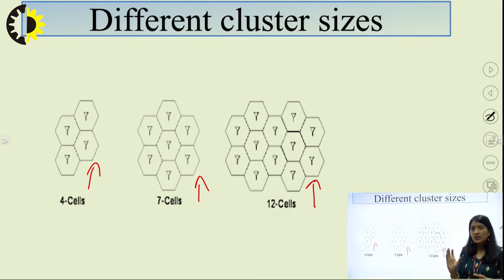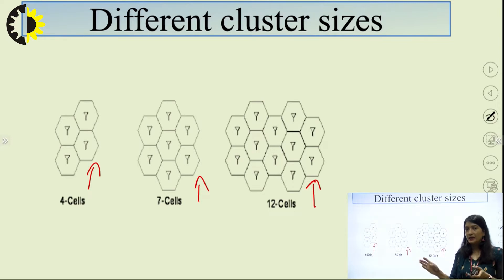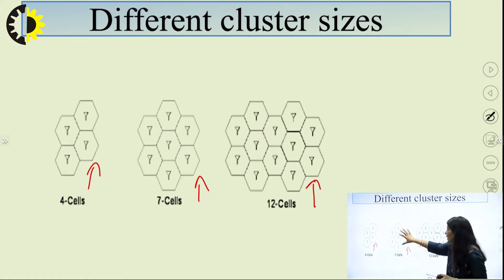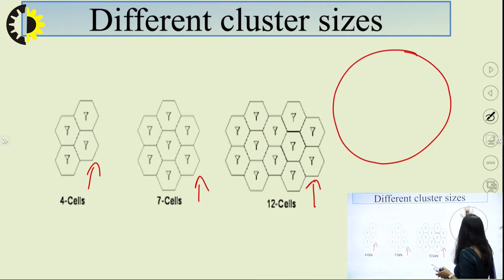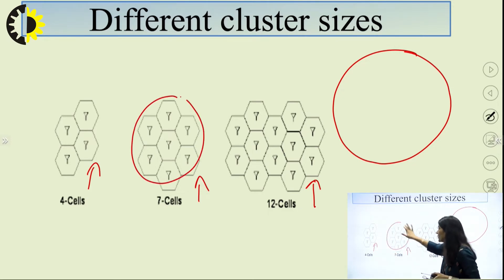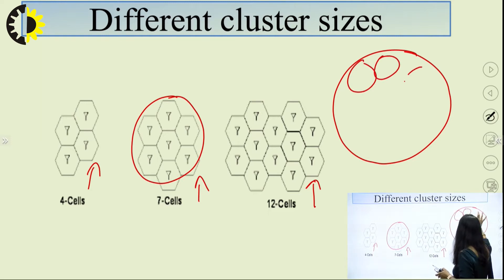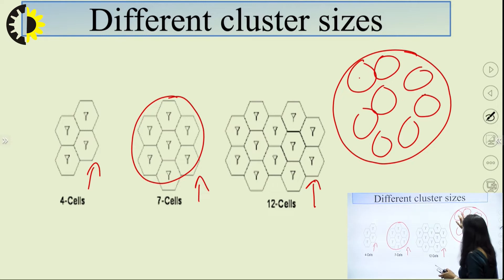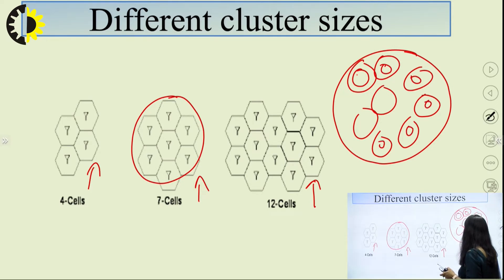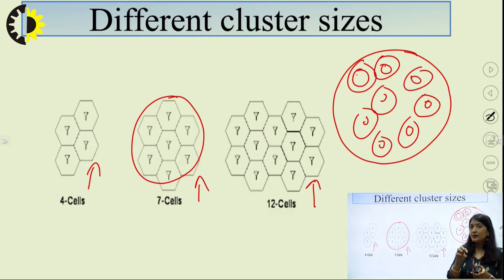The concept of frequency reuse is to use the same set of channels by two different cells at the same time, keeping a minimum distance apart. If I have 100 channels available total, for a cluster size of 7, those channels are allocated to one cluster, and that cluster is repeated multiple times in the geographical area, with the same set of channels used by all clusters simultaneously.